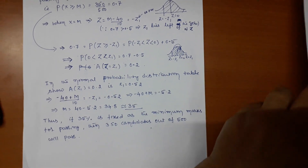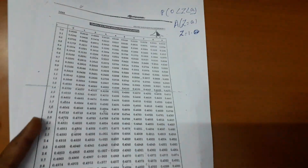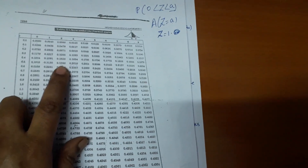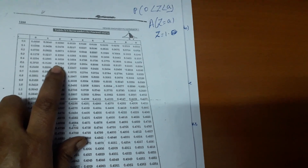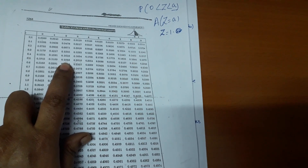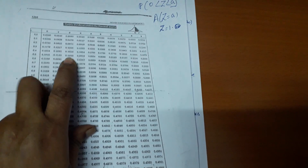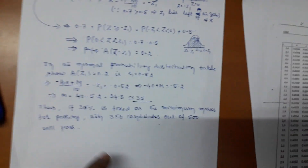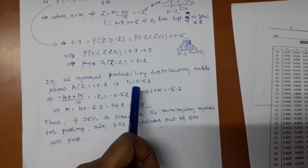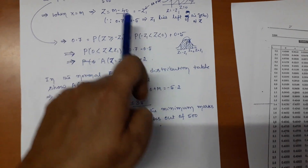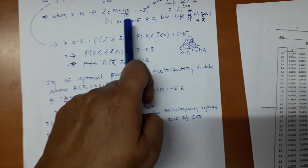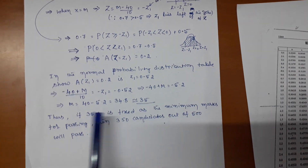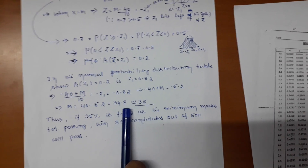Now I need to find z₁ such that the area from 0 to z₁ is 0.2. Searching the Z-table for 0.2: the value 0.2 corresponds to Z ≈ 0.52. So z₁ = 0.52. Substituting back: (m − 40)/10 = −z₁ = −0.52.